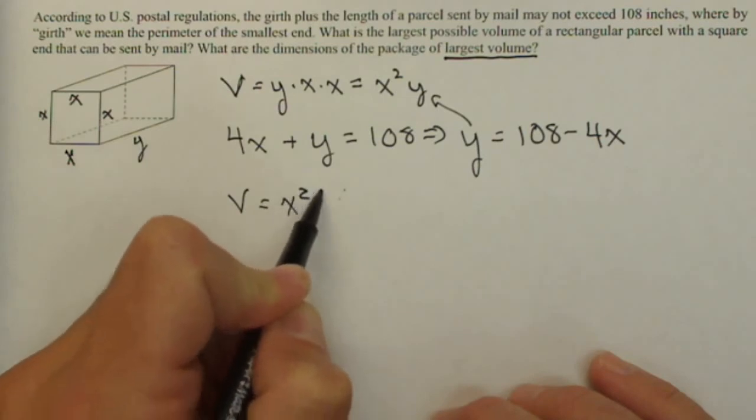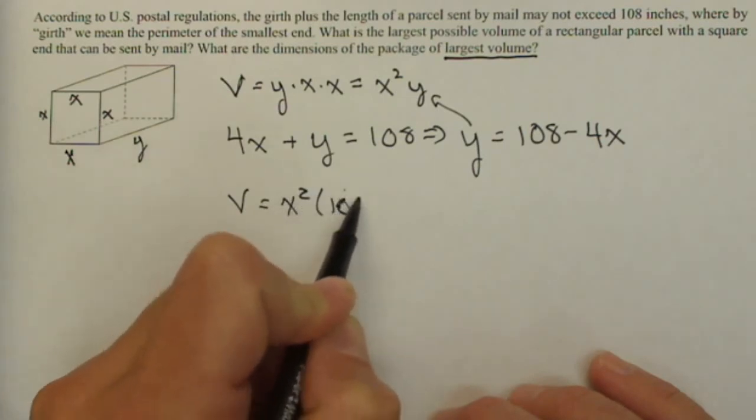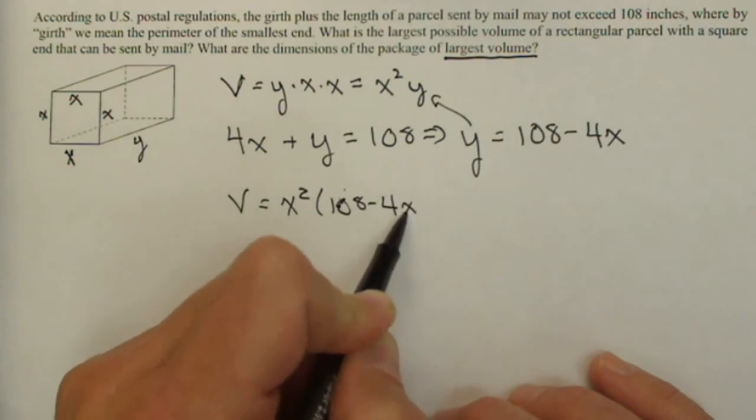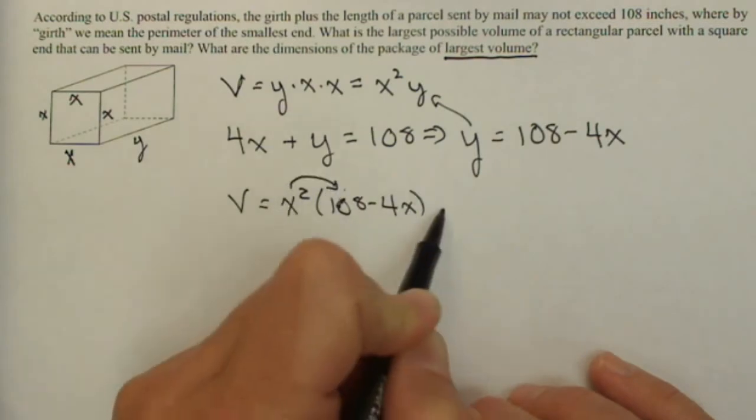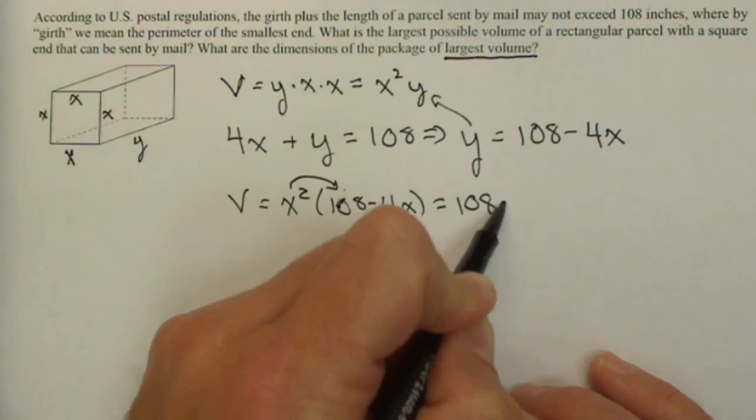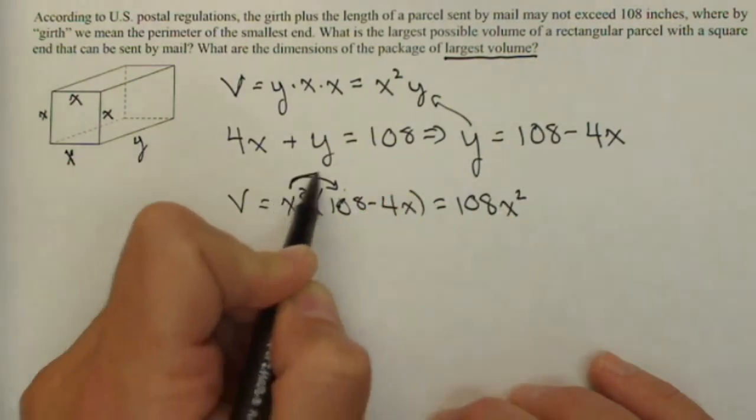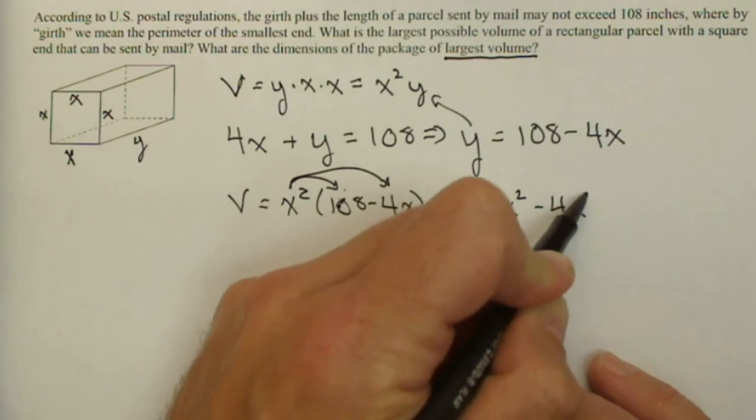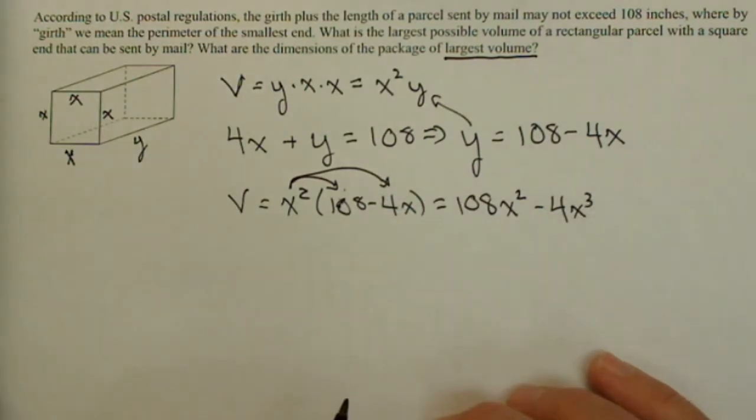And now we're going to use that because this is the same y as it is here to get our volume all in terms of x. So we have x squared times 108 minus 4x. Distributing that x squared, I'll get 108x squared minus 4x cubed. Now we always want to be concerned about any kind of domain restrictions.